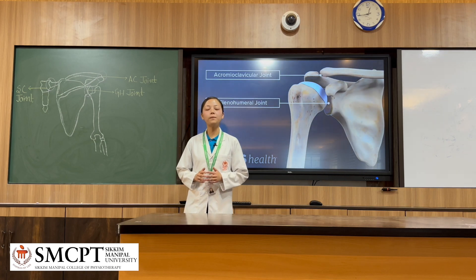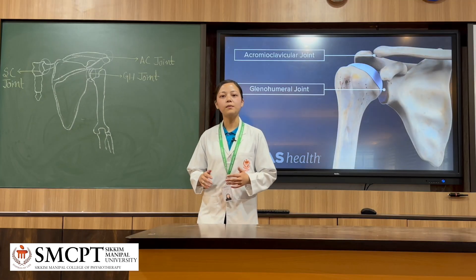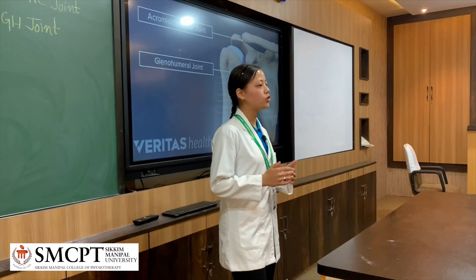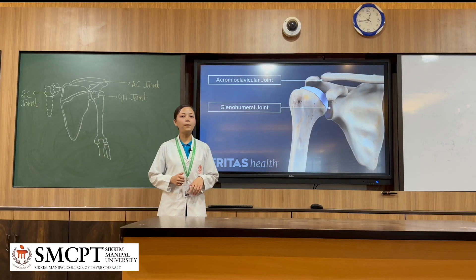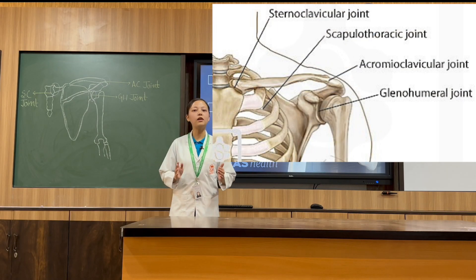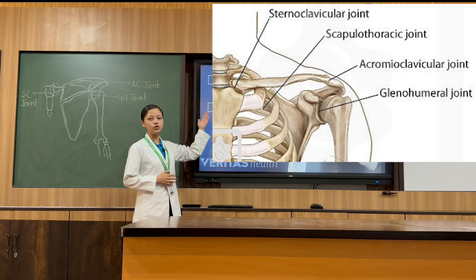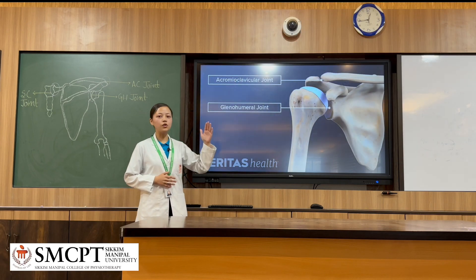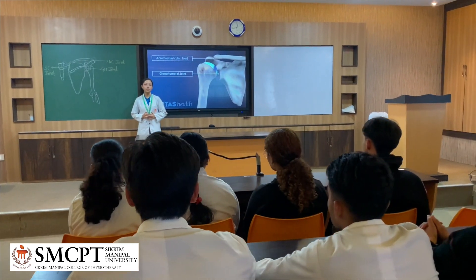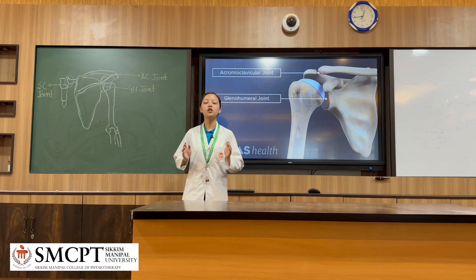Before jumping into the practical demonstration, let us first discuss in brief the anatomy of the glenohumeral joint or shoulder girdle. In the upper limb, the shoulder girdle is comprised of three synovial articulations: the acromioclavicular joint, glenohumeral joint, sternoclavicular joint, and a functional joint between the scapula and thorax known as the scapulothoracic joint.